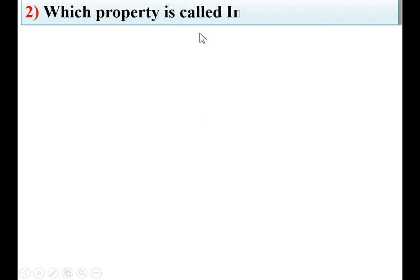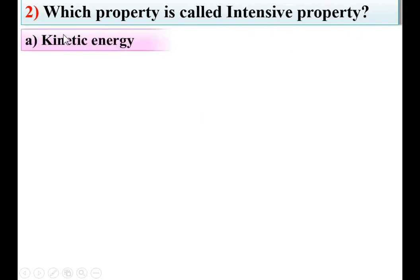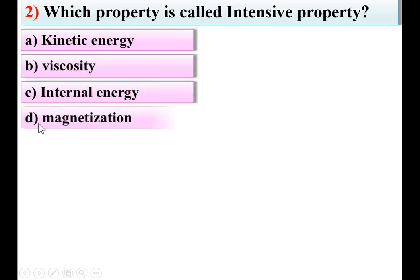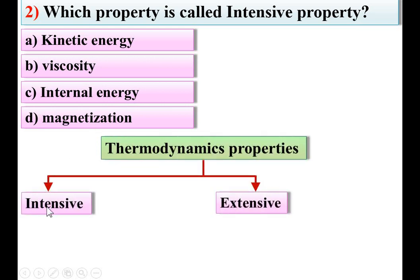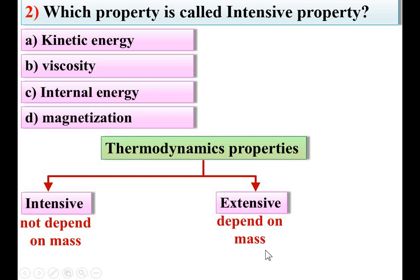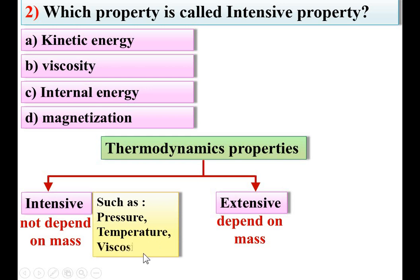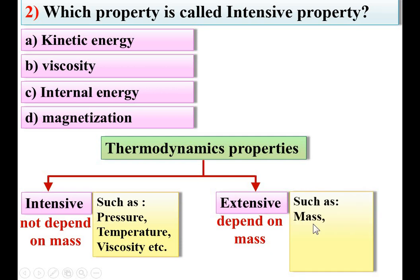Next: which property is called intensive property? Options: kinetic energy, viscosity, internal energy, magnetization. Thermodynamic properties are basically two types — intensive and extensive. Intensive property does not depend on mass, whereas extensive property depends on mass. Examples of intensive properties: pressure, temperature, viscosity. Examples of extensive properties: mass, volume, energy, enthalpy. Here, viscosity is the intensive property, so B is the right answer.